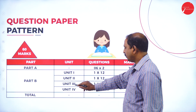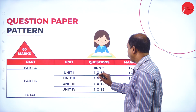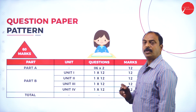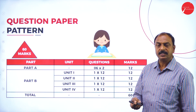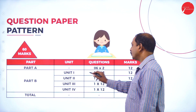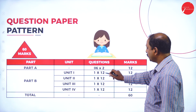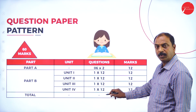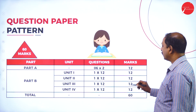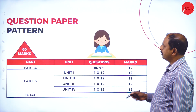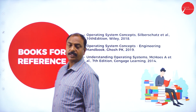In Part B, there are questions from Units 1, 2, 3, and 4. In each unit, students must answer one question of 12 marks each. Two questions are provided per unit and students answer any one, for 12 marks each. The total marks for the theory paper is 60 marks. This is the question paper pattern.